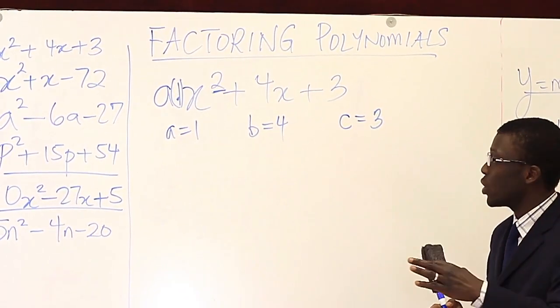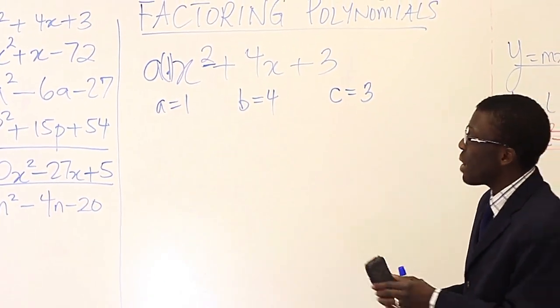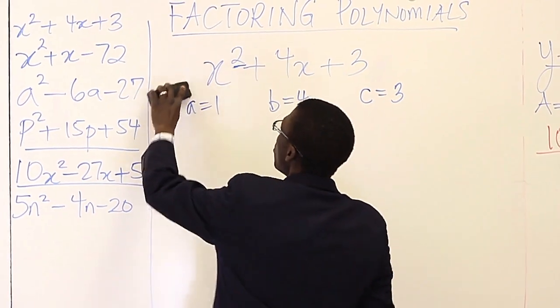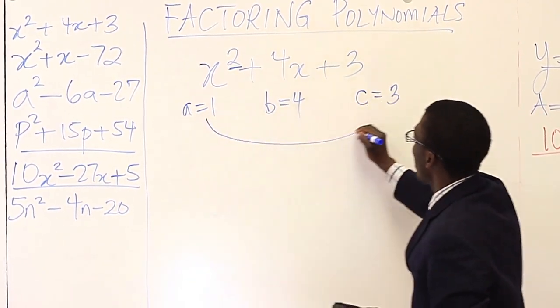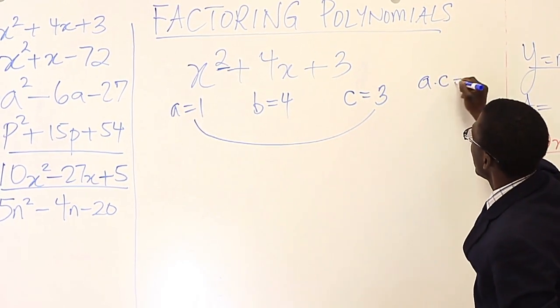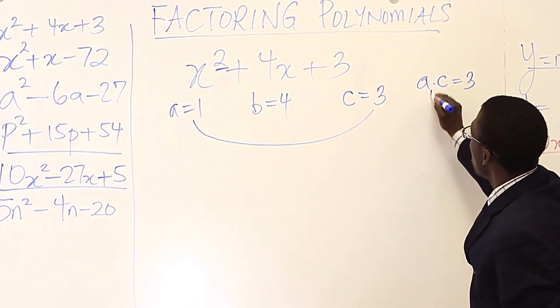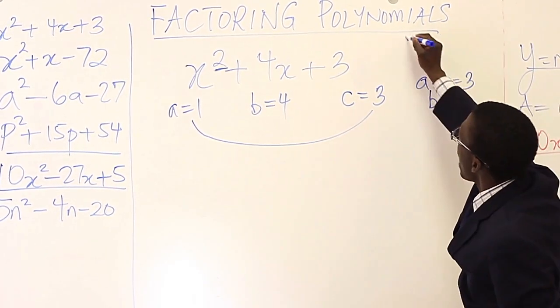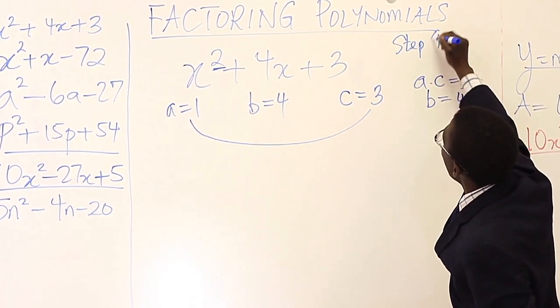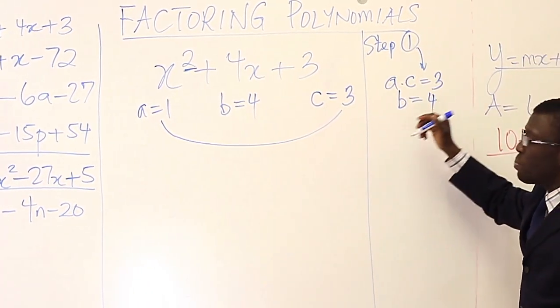Now, remember the a, b, and c, because we're going to learn a method, which I call the ac method. According to the ac method, we need to find two numbers that multiply to give a times c, which in this case is 3. 3 times 1 is 3. And b is 4. So step 1 is to find this information. What is ac and what is b?